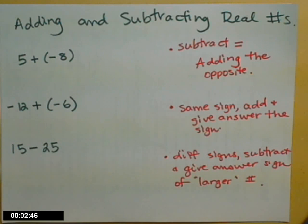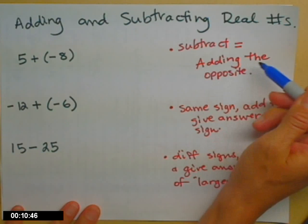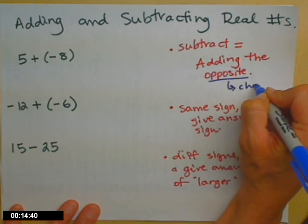So now we just have three examples for adding and subtracting real numbers. A couple things to keep in mind. Subtracting means the same thing as adding the opposite. And remember, opposite in math means change the sign.